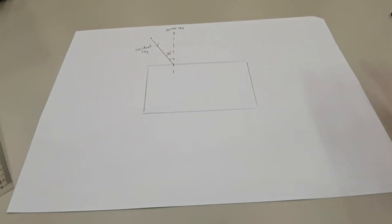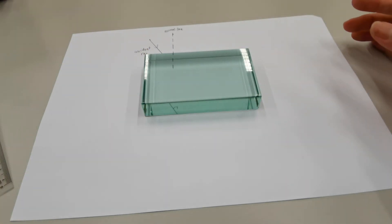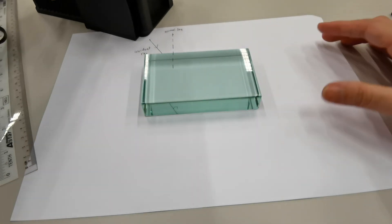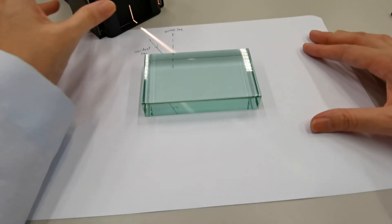Next, we're going to replace the glass block over the tracing. And we're going to place the ray box on this side. And we're going to switch it on and shine the light ray along the incident ray that we have drawn.